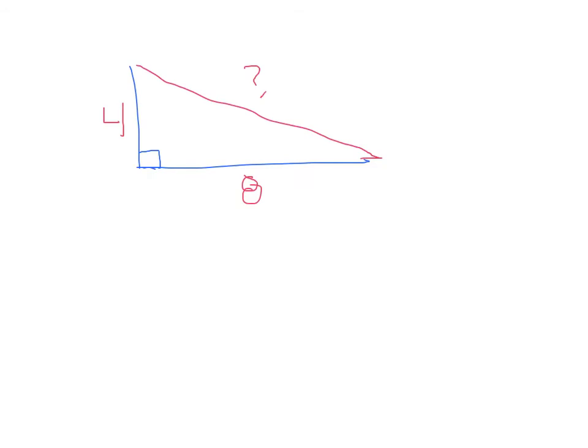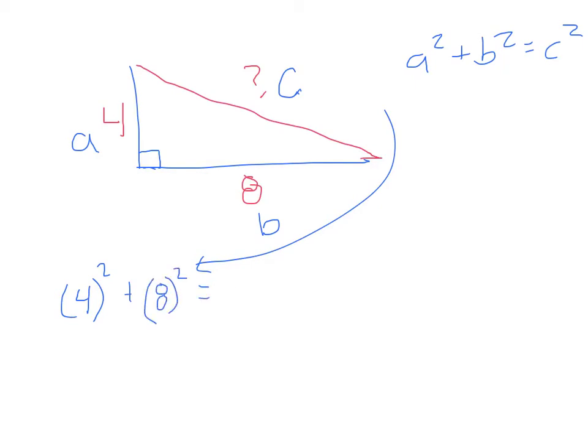Let's try just a few more here. How about this one? We have, again, you can see that this is one leg, this is the other leg, this is the hypotenuse. We're going to label that c. Let's just call this a and this b this time. It doesn't really matter as long as the c is the hypotenuse. We'll put our formula up here: a squared plus b squared equals c squared.